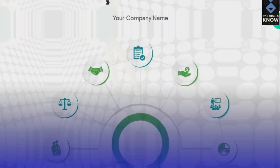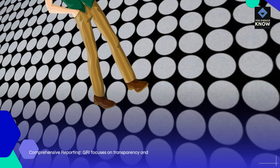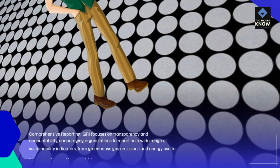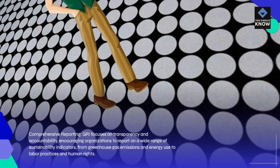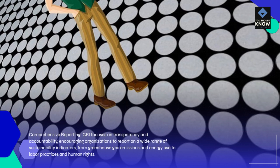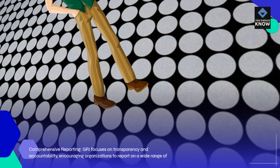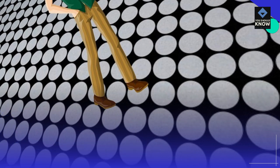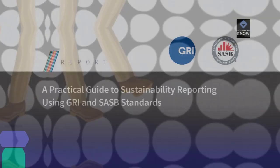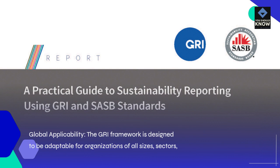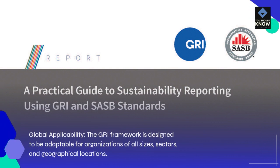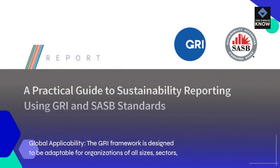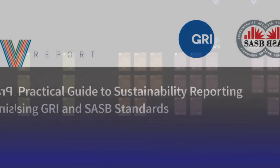Key Features. Comprehensive Reporting: GRI focuses on transparency and accountability, encouraging organizations to report on a wide range of sustainability indicators, from greenhouse gas emissions and energy use to labor practices and human rights. Global Applicability: The GRI framework is designed to be adaptable for organizations of all sizes, sectors, and geographical locations.